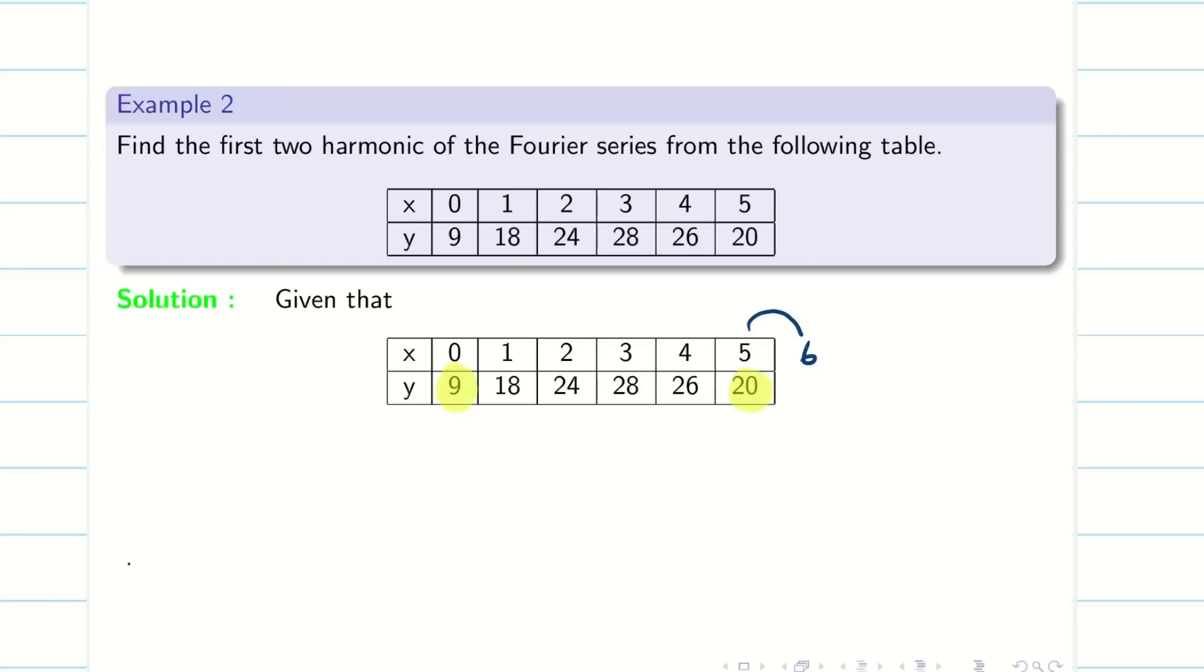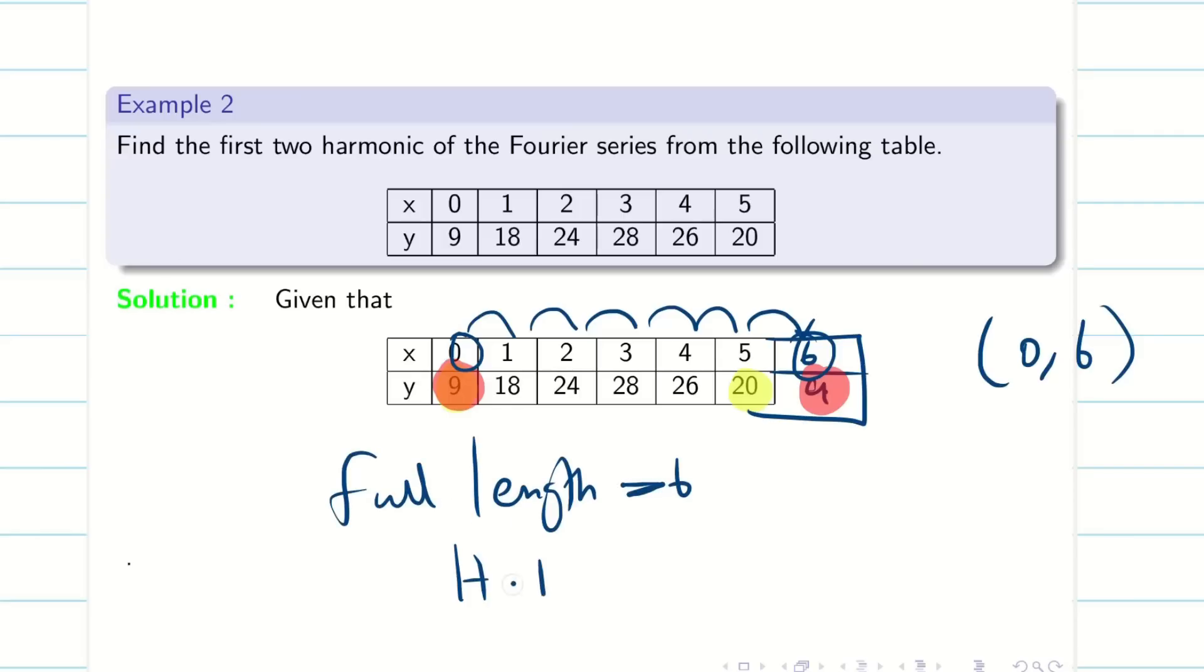Now we have to go for the next increment. Here the increment is 1: 0, 1, 2, 3, 4, 5, 6, and it will be 9. So this is the complete table which consists of first value and the last value being the same. The interval is 0 comma 6. The starting value is 0 and end value is 6, so my length is going to be 6 minus 0, that is 6. My full length is 6. Now I have to find the half length, it's 6 by 2, which is 3.